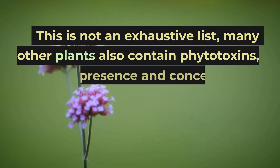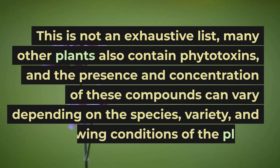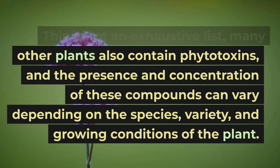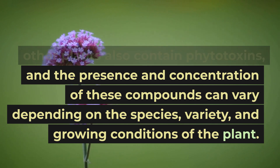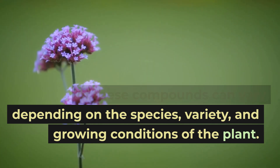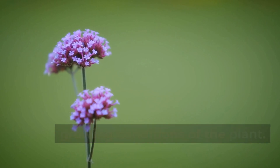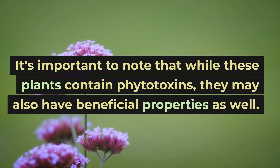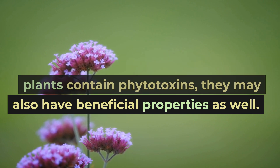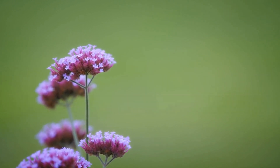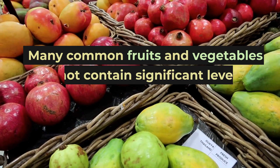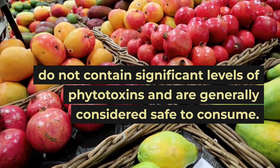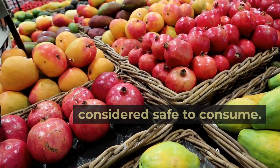This is not an exhaustive list. Many other plants also contain phytotoxins, and the presence and concentration of these compounds can vary depending on the species, variety, and growing conditions of the plant. It's important to note that while these plants contain phytotoxins, they may also have beneficial properties as well. Many common fruits and vegetables do not contain significant levels of phytotoxins and are generally considered safe to consume.